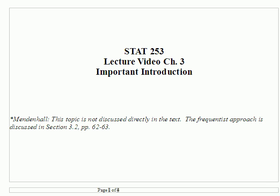This lecture is an introduction to the two different branches of probability. It is not discussed directly in the text. One of the branches, called the frequentist approach, is discussed in section 3.2 on pages 62 to 63.